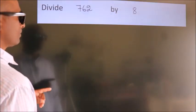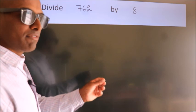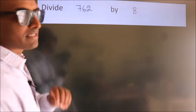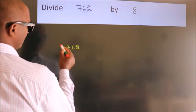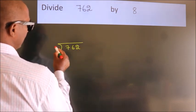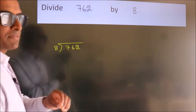Divide 762 by 8. To do this division, we should frame it in this way. 762 here, 8 here. This is your step 1.